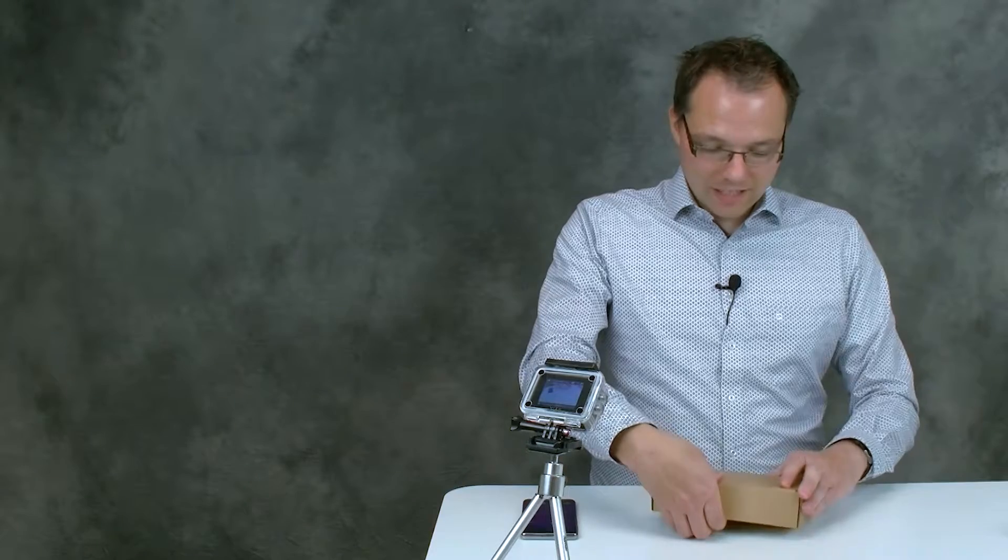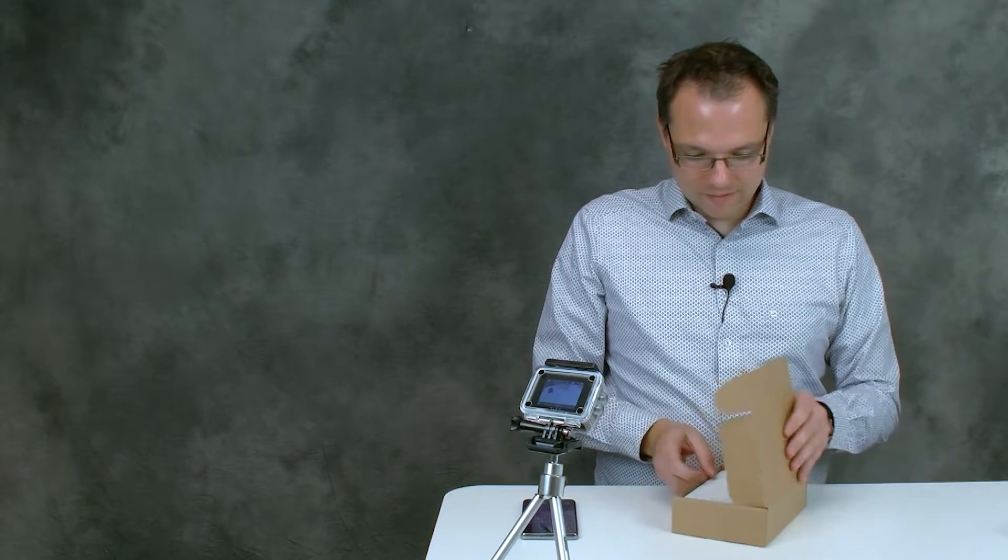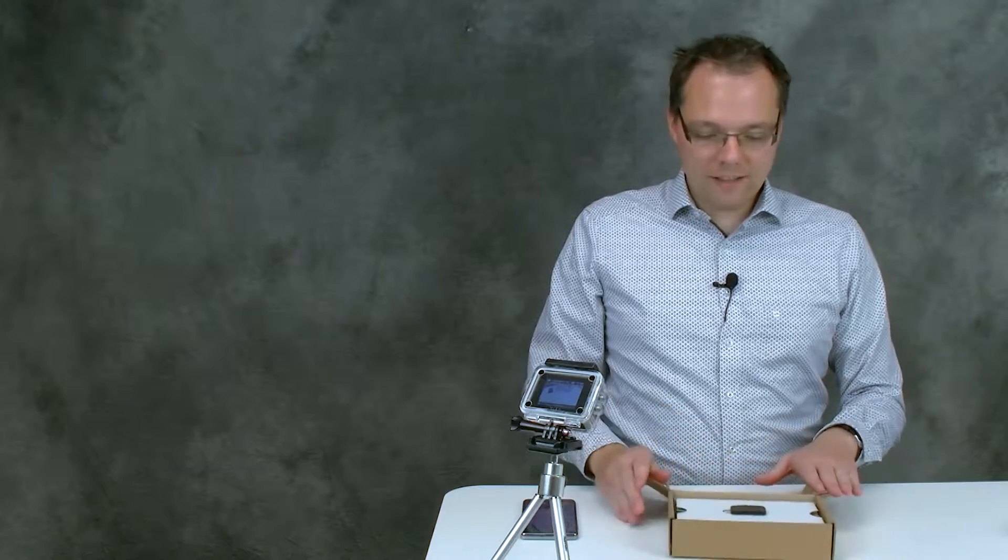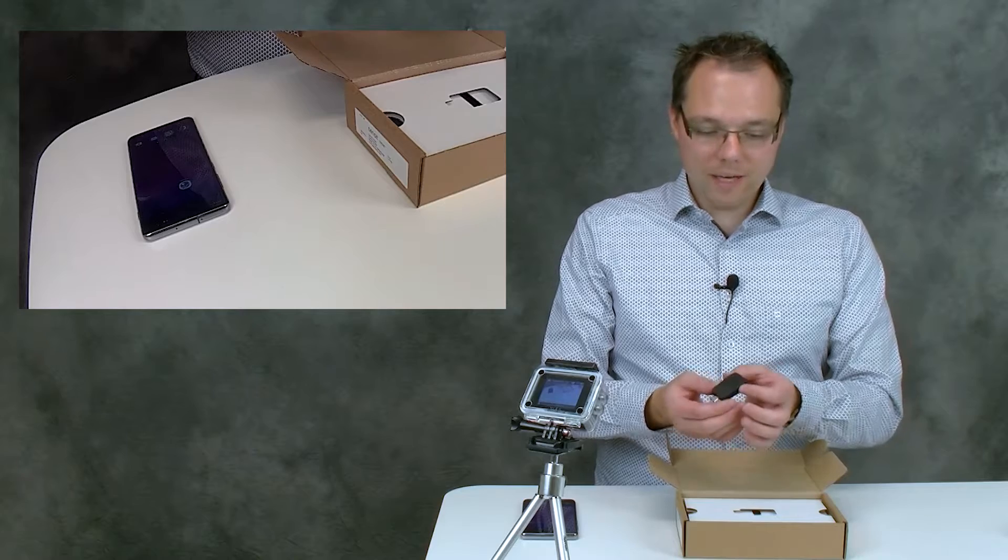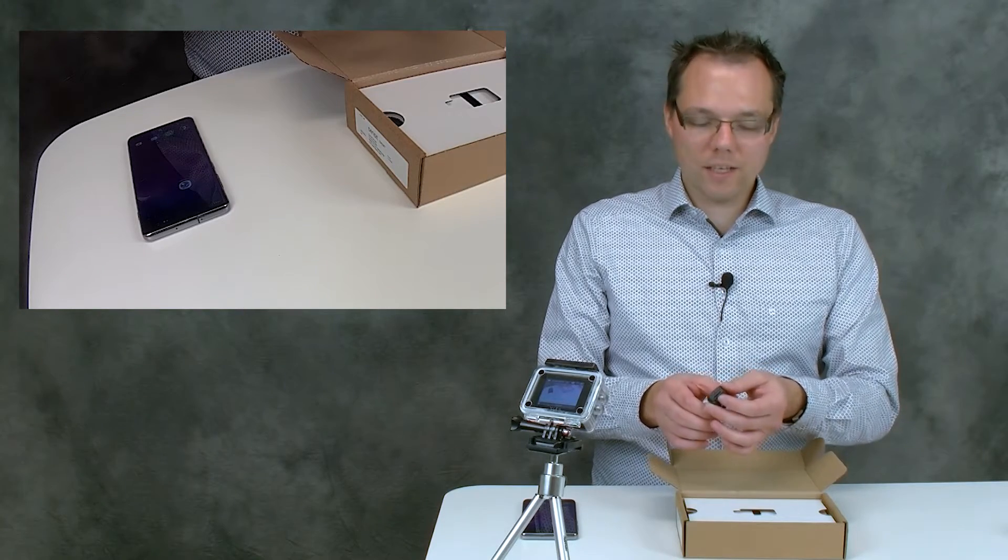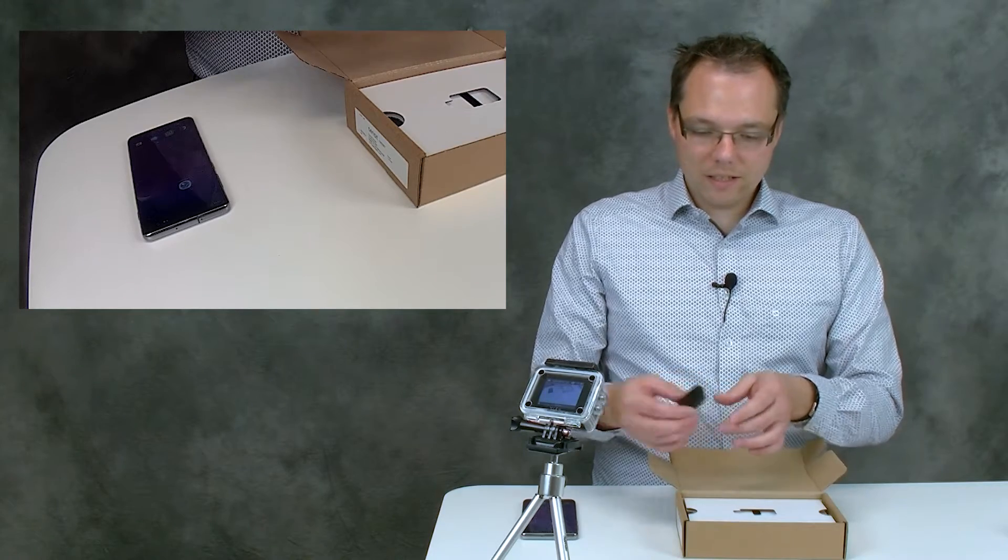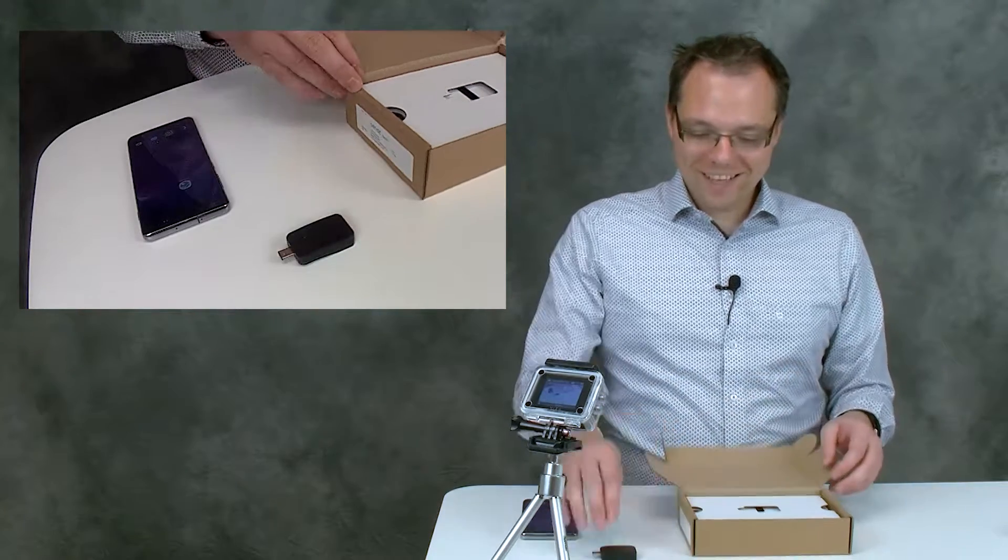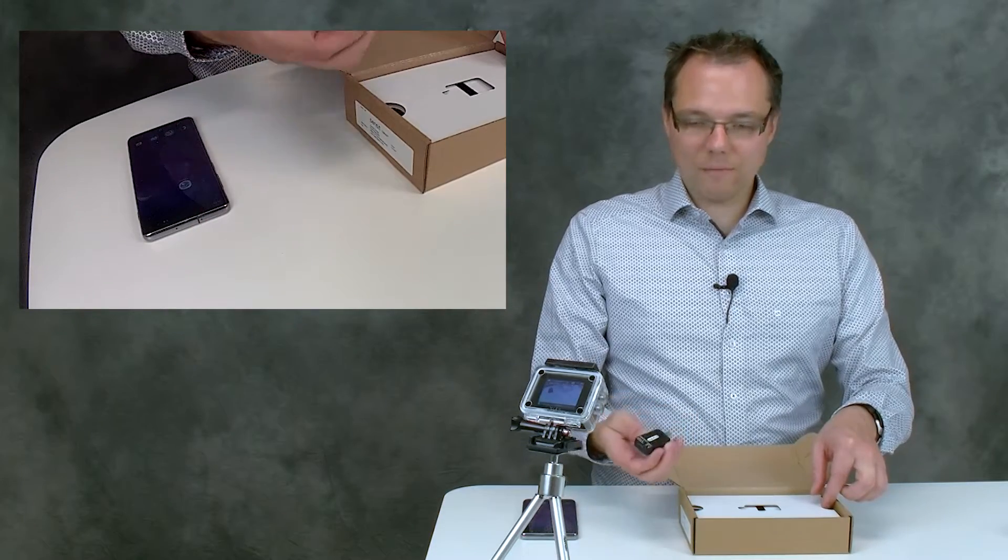We remove the sleeve and open the box, and in there we find the Sensit Smart. As you see, the Sensit Smart has only the screen-print electrode connector and a USB-C connector, and that's it. On the back you find the serial number.